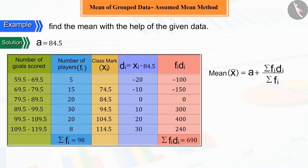On putting the values of assumed mean A, summation fi di, and summation fi in the formula of assumed mean method, and solving, the value of mean x̄ is obtained as 91.54.